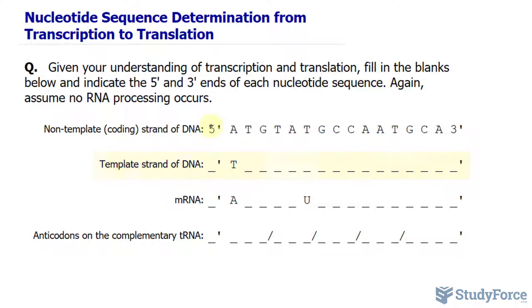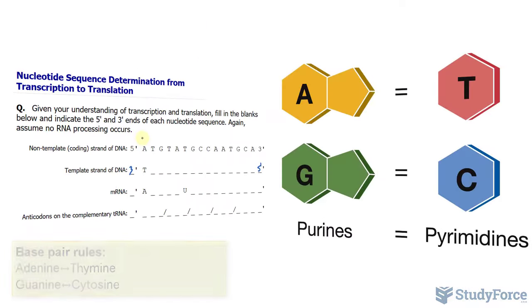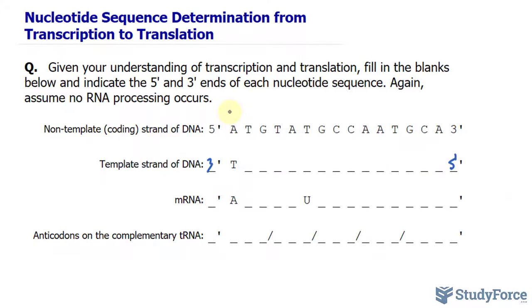So if this nucleotide sequence is going from 5' to 3', then the template strand will be 3' to 5'. It's always anti-parallel. So A base pairs with T and vice versa, while G base pairs with C. A is adenine, T is thymine, G is guanine, and C is cytosine. That being said,